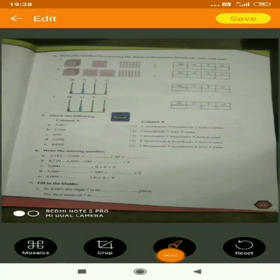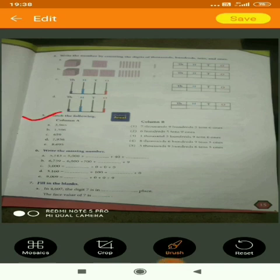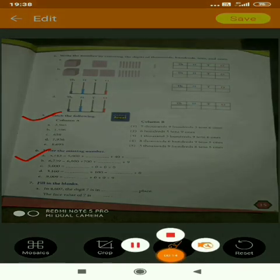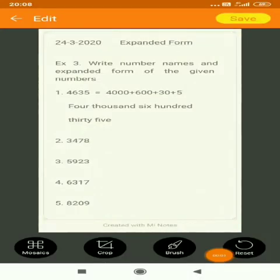After page number 14 come to page number 15 and do question number 5 and 6. All these questions you have to do in book itself. Now children open your maths notebooks, write today's date and topic expanded form and do this exercise. First one is solved for you as an example.